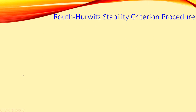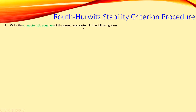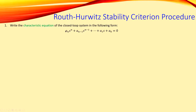Let's look at the procedure for the Routh-Hurwitz stability criterion. The first step is to write your characteristic equation of your closed-loop system in the following form. This is a polynomial with coefficients an down to a0, which are all constant. We have s to the power n going down to s to the power zero, with zero on the right side.